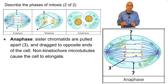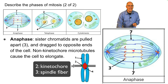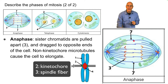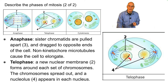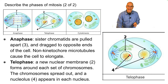During anaphase, the spindle pulls the sister chromatids apart and starts dragging them to the opposite ends of the cell. At the same time, there are non-kinetochore microtubules. A kinetochore is like a handle on the chromosomes that the spindle fibers use to pull the chromosomes apart, but there are other fibers that push on one another, causing the cell to elongate. During telophase, a new nuclear membrane starts to grow around each set of chromosomes, and the chromosomes spread out into their interphase formation.